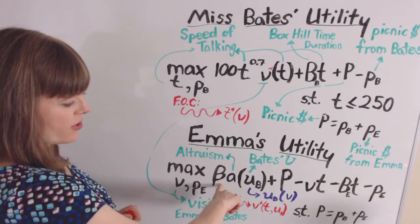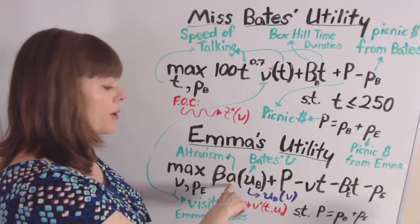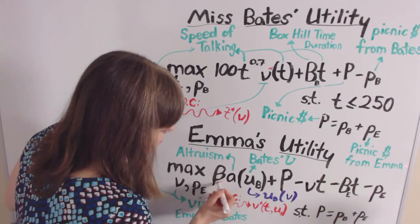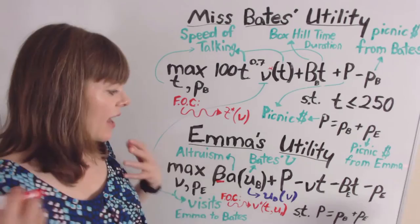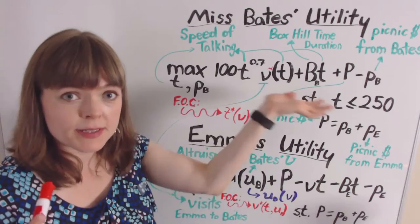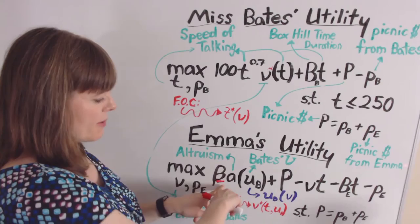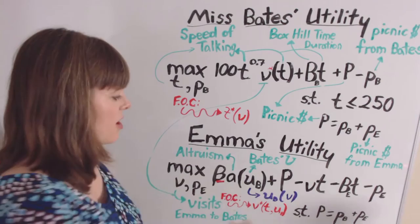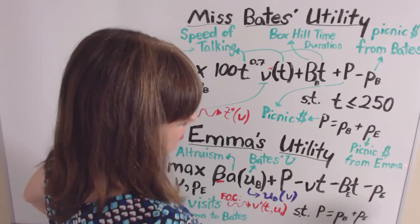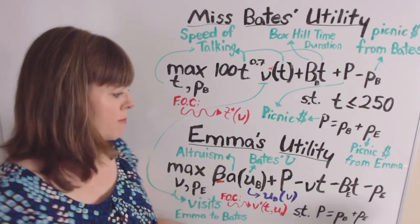The coefficient beta is the importance weight on altruism. For Mr. Knightley, this beta is the main thing he cares about — he really wants Emma to be the kind of person who is altruistic and visits Miss Bates because she genuinely cares about her. Mr. Knightley essentially argues that Emma needs to increase her beta weight, her importance weight on altruism toward Miss Bates. The rest of the model is about the financing of Box Hill, though this part is a bit too simple since there's no curvature related to the picnic financing.